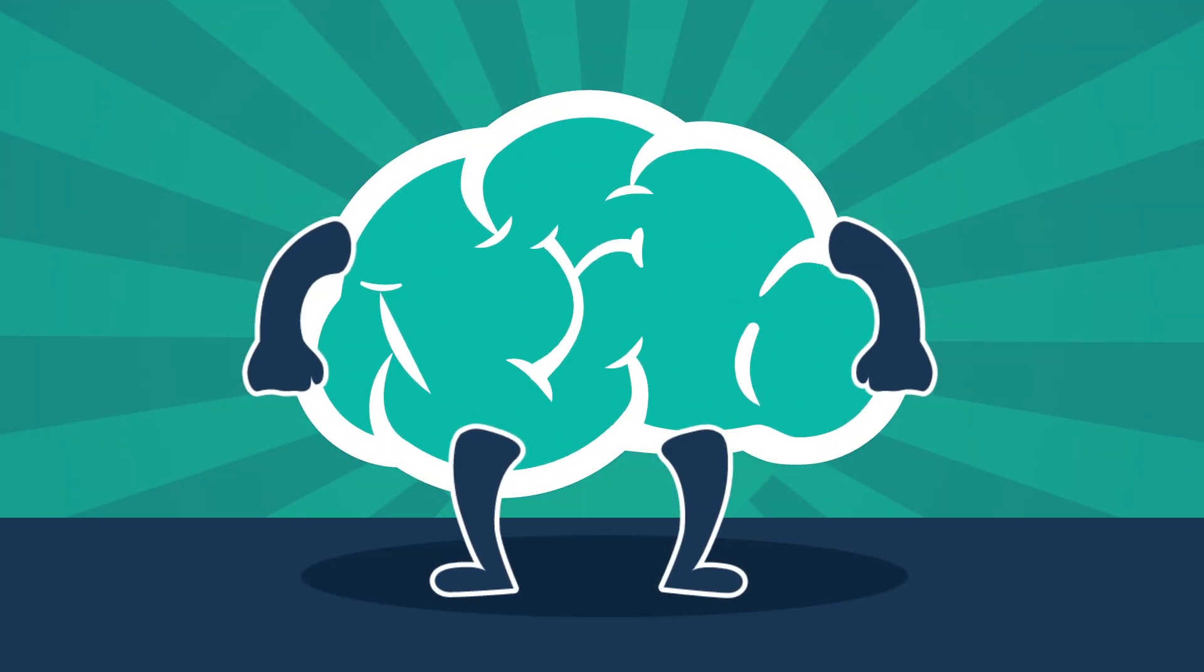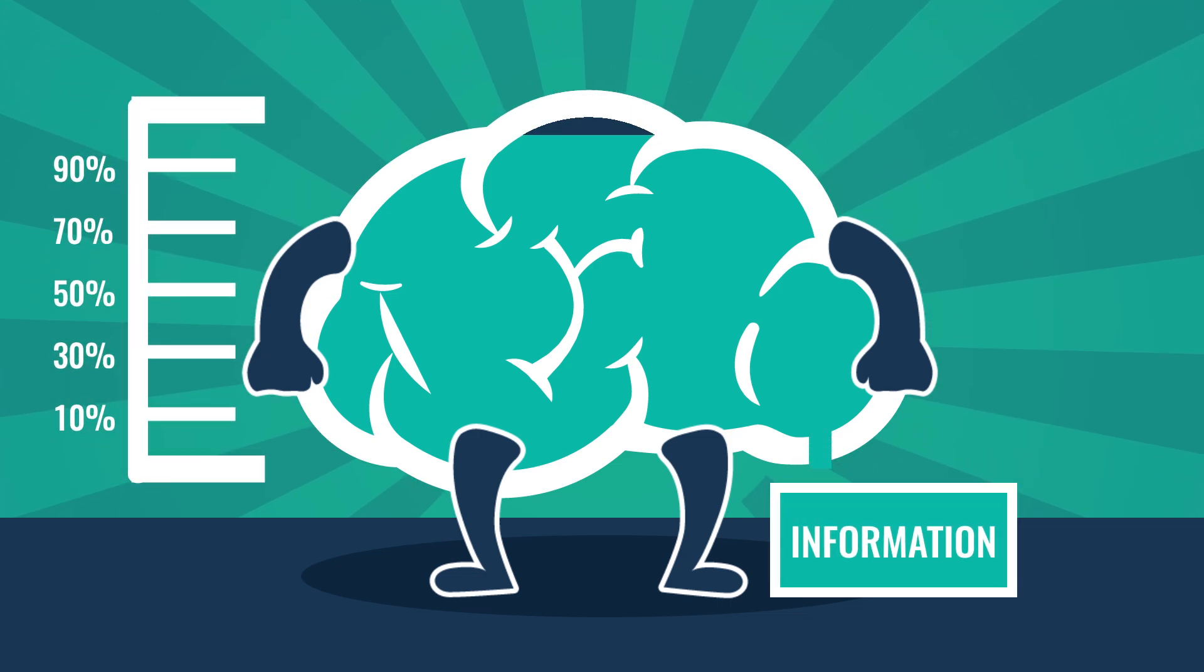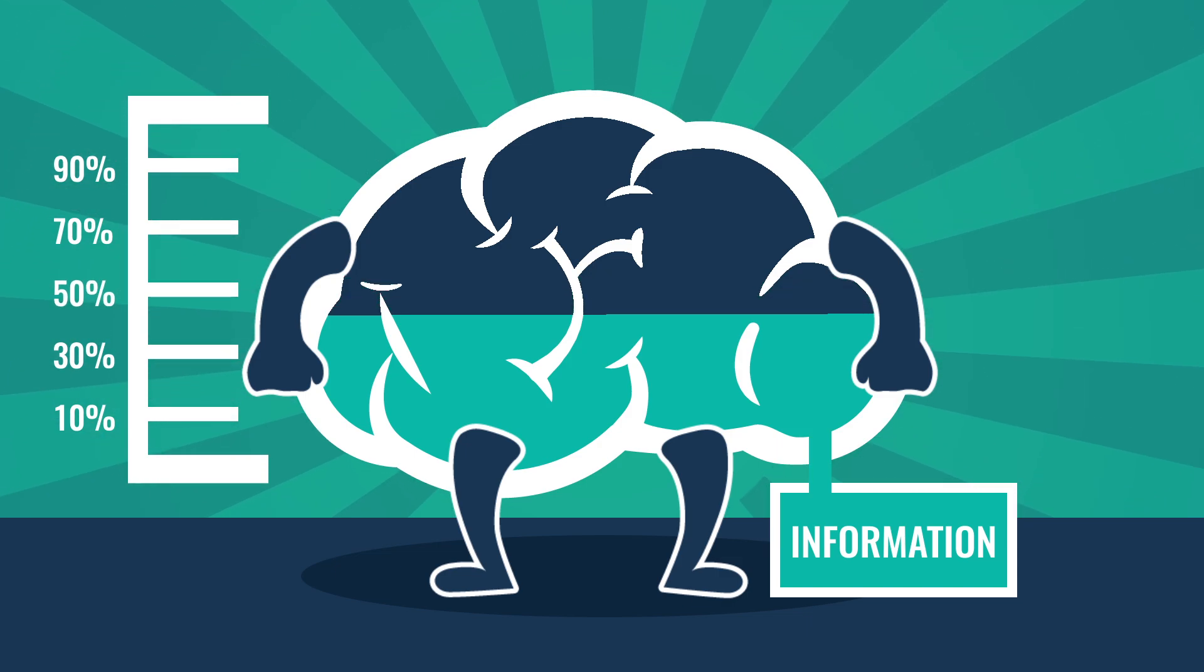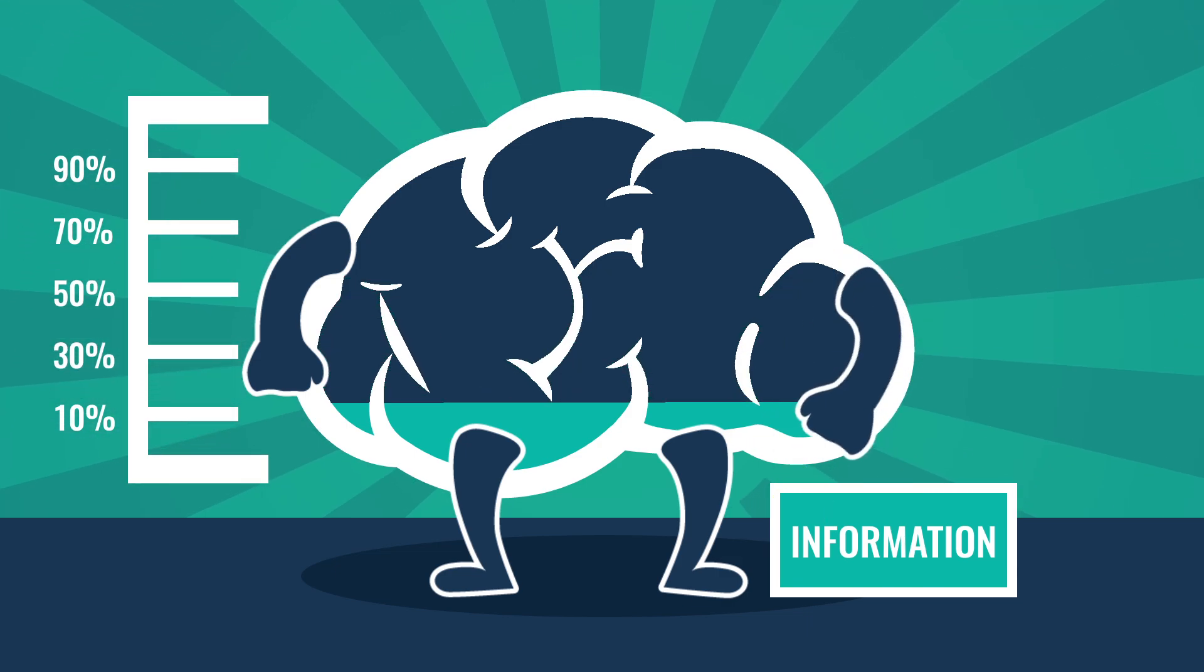His findings showed just how rapidly information seeps out of our brains. Within a month, Herman had forgotten 90% of everything he'd originally learned.